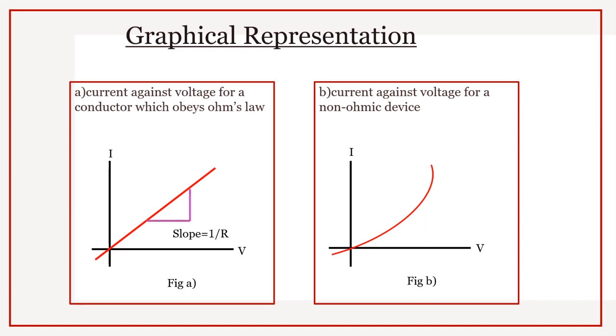As voltage increases, current increases steadily. Only conductors obey Ohm's law. They are also called ohmic.